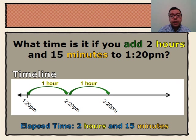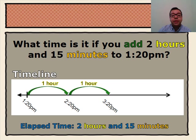First, we'll add our hours. 1:20 p.m. plus 1 hour will give us 2:20 p.m., then plus another hour will get us to 3:20 p.m. So, 1:20 p.m. plus 2 hours will get us to 3:20 p.m.